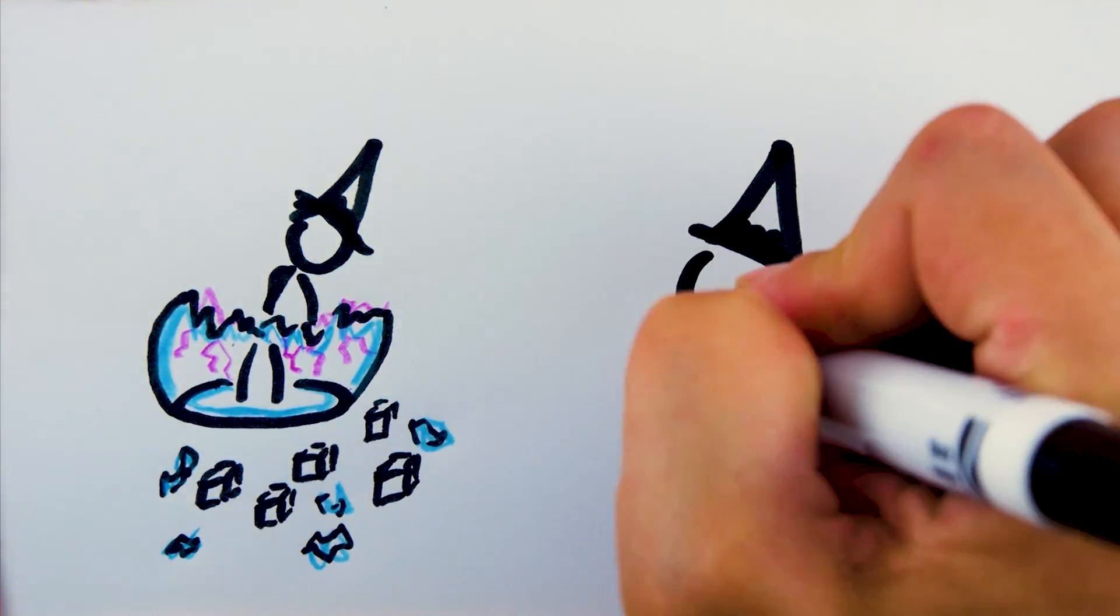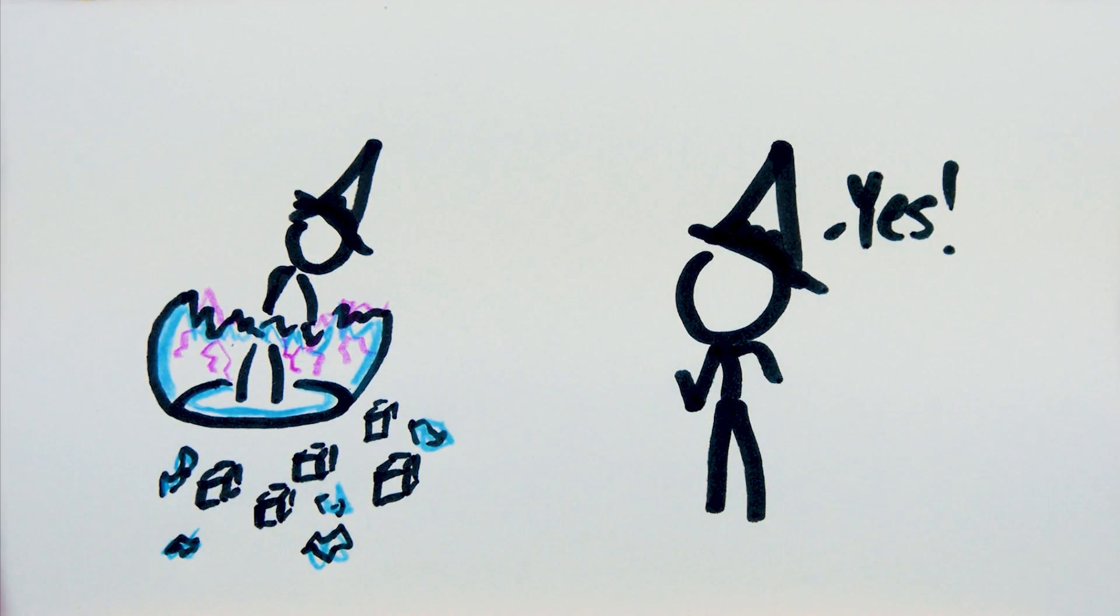Every net hit on the dispelling test reduces the number of hits the caster had in casting the spell. This can reduce the effectiveness of the spell, such as in the case of increased reflexes. If the net hits are reduced to zero, then the spell ends completely.